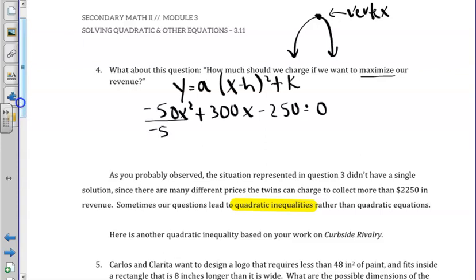So our GCF is negative 50, and we'll be left with x squared minus 6x when we divide by negative 50. If we recall, to complete the square, we take half of b divided by 2 squared, which would give us positive 9. So when we complete the square, we'd get a positive 9.